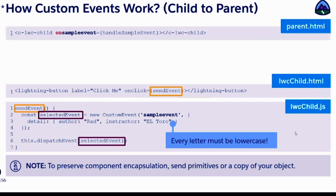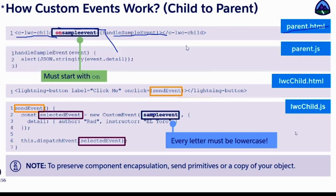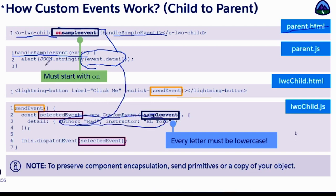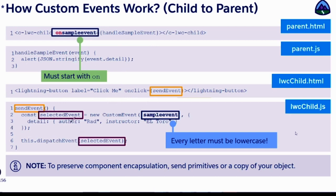Then it's time to handle the event. We go to the parent. In the parent, we are calling the child and saying that this child will fire the sample event. So when this child fires the sample event, we call the handle sample event JavaScript method in the parent. Inside the parent JavaScript, I have written this handler code, and I'm calling event.detail. When you call event.detail, it will return both author and instructor. You can stringify it using the JSON class, or you can grab event.detail.author and event.detail.instructor separately.